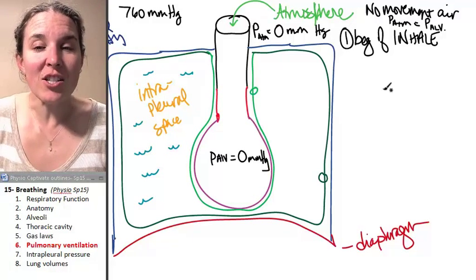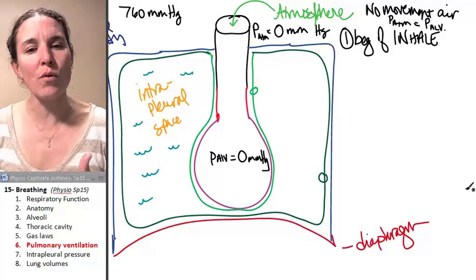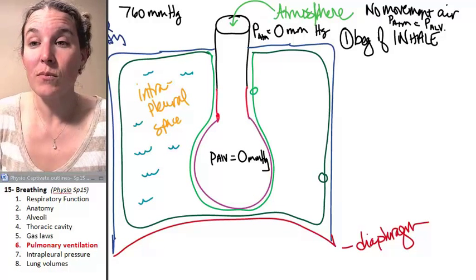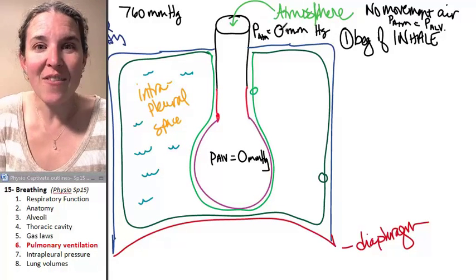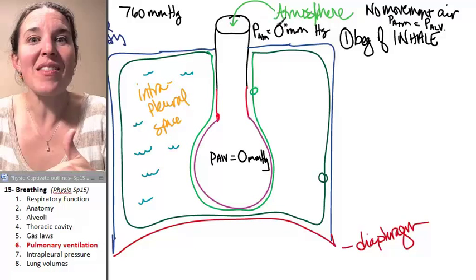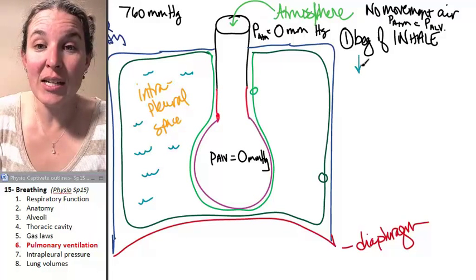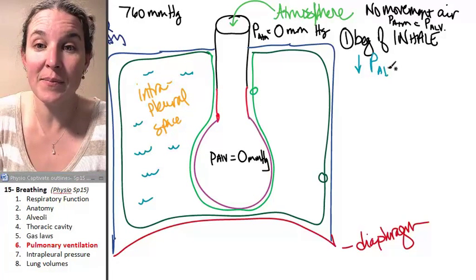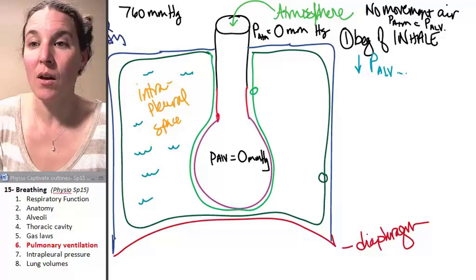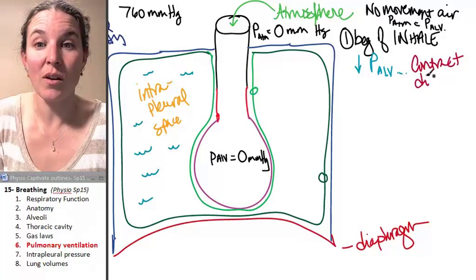So our challenge is, at the beginning of an inhale, we have to somehow motivate atmosphere to move into the alveolus. So what is the thing that's going to have to happen? We're going to have to have a pressure gradient. We're going to have to have a lower pressure inside the alveolus so that the air can move from high pressure to low pressure. So somehow we have to decrease pressure in the alveoli. And those of you who've had anatomy, how does that happen? What do we do? To make it happen, we contract who? The diaphragm.